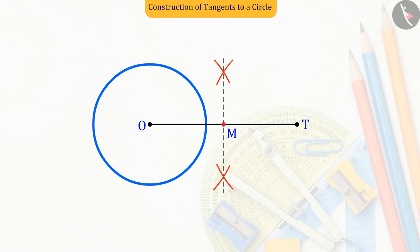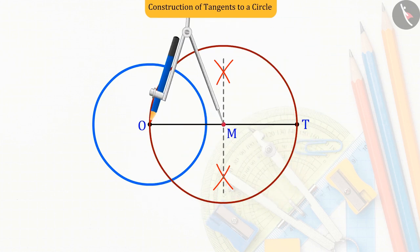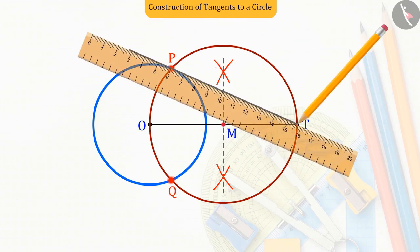The point M is the center. And taking OM and MT as radius, let's draw a circle which intersects the given circle at points P and Q. Now join the point T to the points P and Q.